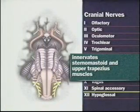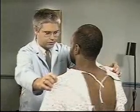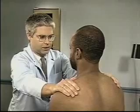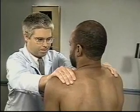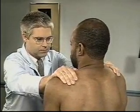Cranial nerve 11, the spinal accessory nerve, innervates the sternomastoid and upper trapezius muscles. To assess this nerve, ask the patient to shrug his shoulders upward against your hands, and evaluate the strength and contraction of the trapezius muscles.